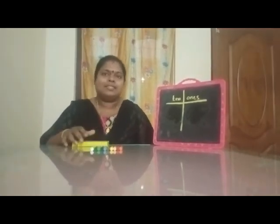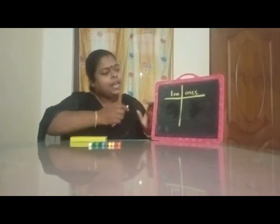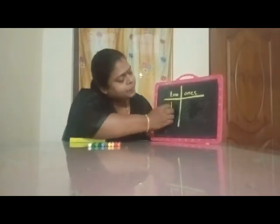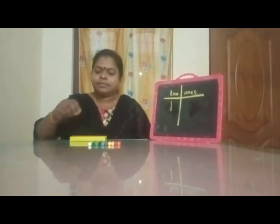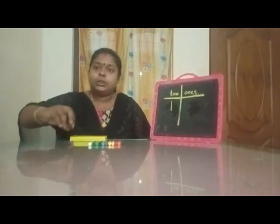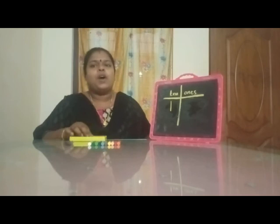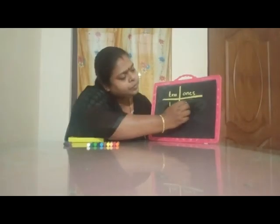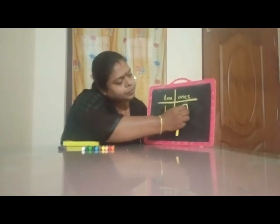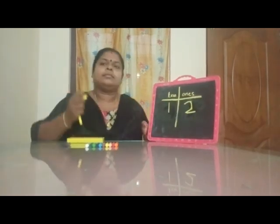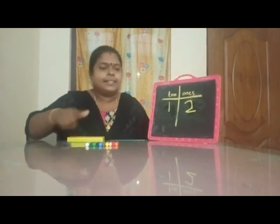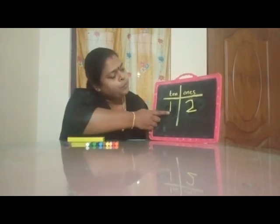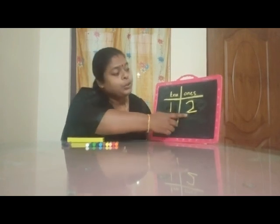This is our group of ten crayons — we have one group of ten. Now let's count the remaining crayons: one, two. We have two ones. Group of ten, two ones — one ten, two ones.